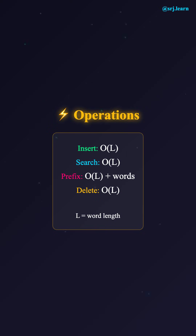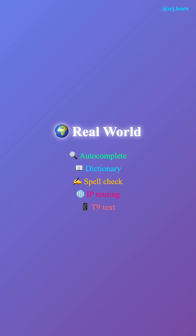Let's talk about operations and their time complexity. To insert a word, you traverse character by character — the time is O(L), where L is the length of the word. To search for a word, same thing: O(L). To find all words with a given prefix, you first reach the prefix node in O(L) time, then return all words under that subtree. To delete a word, you mark the end node and optionally remove unused nodes — again, O(L).